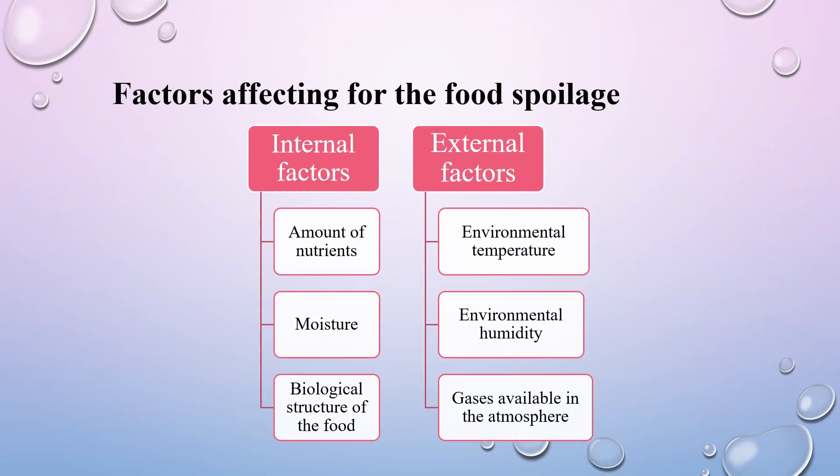Factors affecting food spoilage include internal and external factors. Internal factors are the amount of nutrients in the food, moisture content, and the biological structure of the food. External factors are environmental temperature, environmental humidity — which refers to the amount of water vapor in the environment — and gases available in the atmosphere.